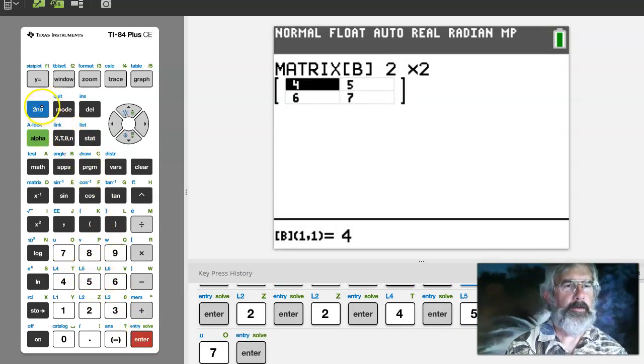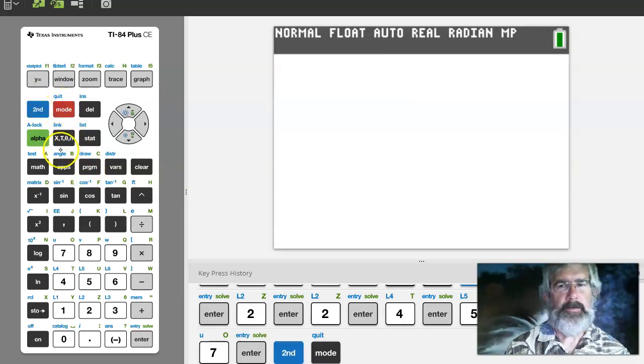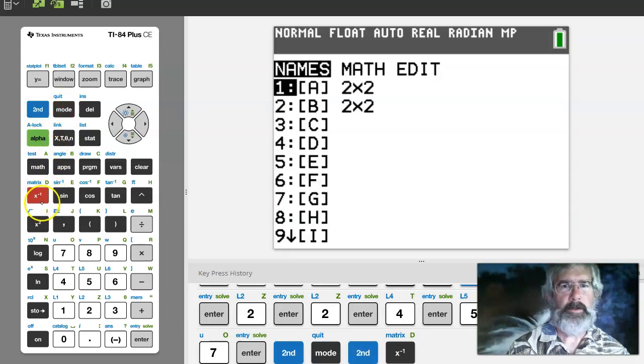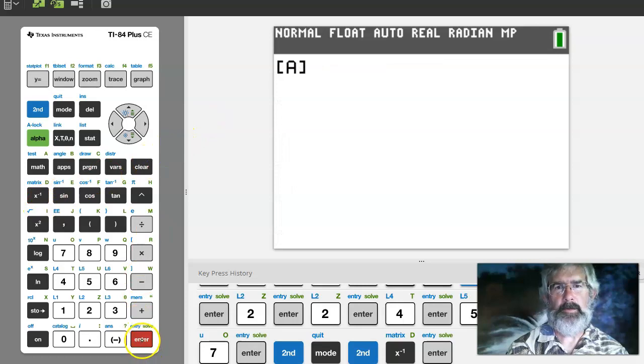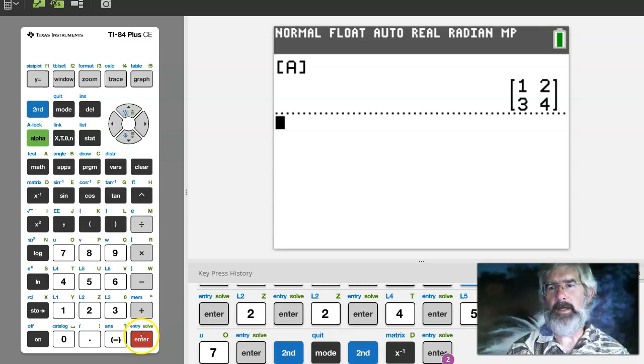Let's go to the home screen. So second function quit. And if I say matrix I'm in the names, A is selected. I hit enter so it pulls up A to the home screen. When I hit enter it tells me what matrix A is.